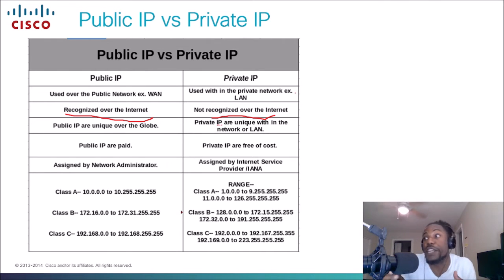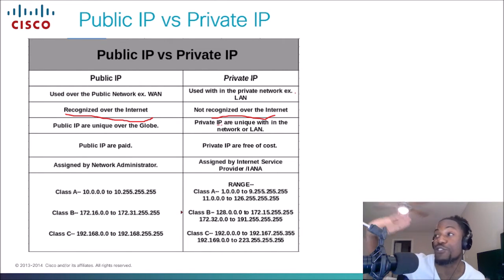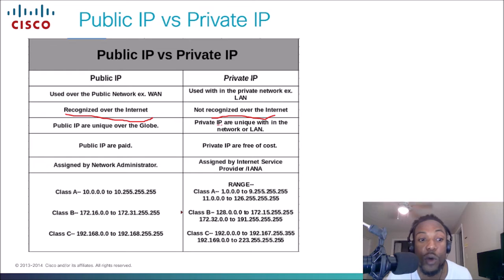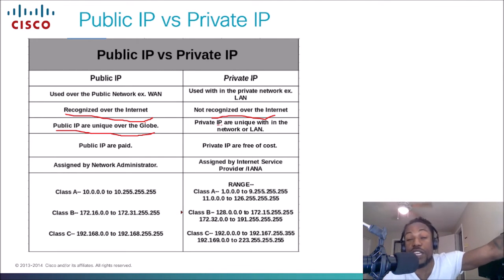When we need to watch a video — like a YouTube stream — we need to use a public IP address to communicate with Google's servers. Public IP addresses are also unique across the globe, so there is no such thing as a duplicate public IP address.